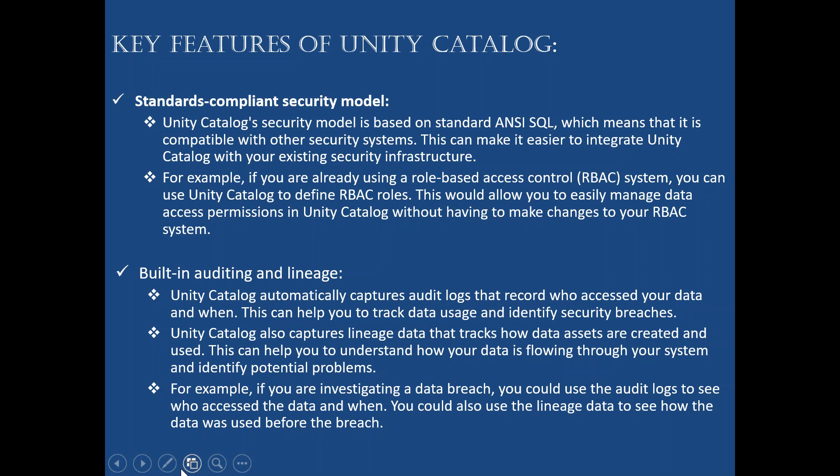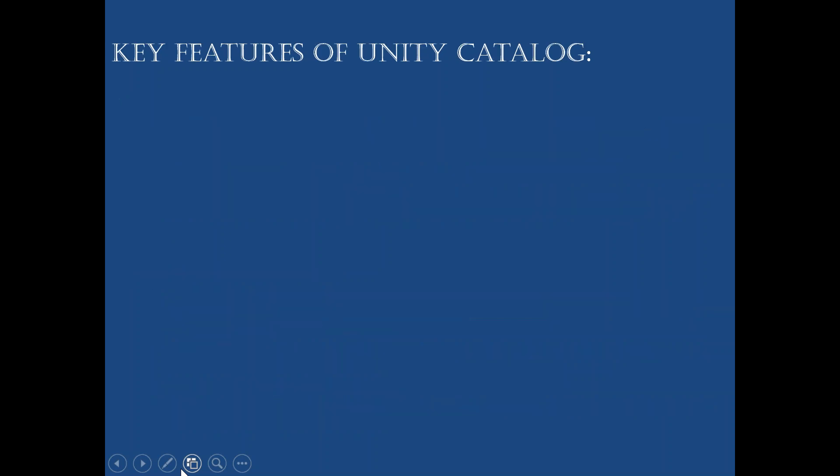To summarize so far: first, define once and secure everywhere; second, standard compliance and security model which lets your existing RBAC systems integrate with Unity Catalog without rebuilding; and third, built-in auditing and lineage — lineage tracks dependencies, auditing tracks who accessed data and when, which helps in case of data breaches.